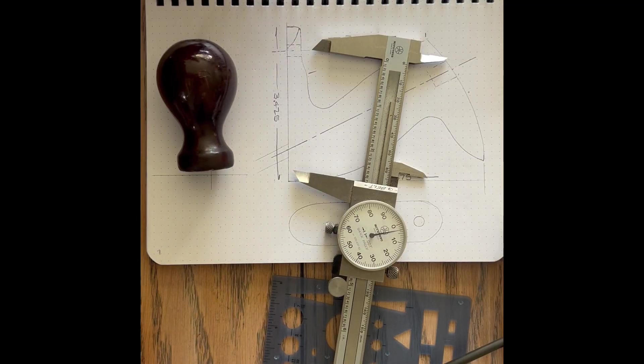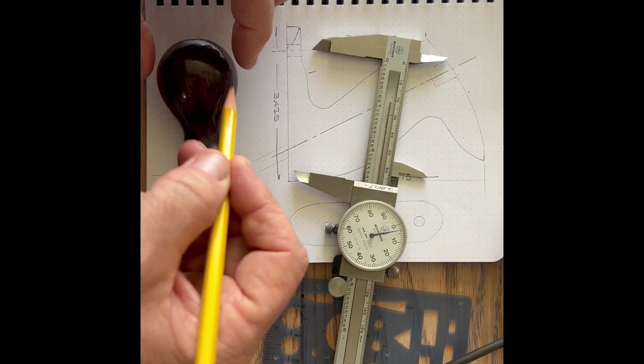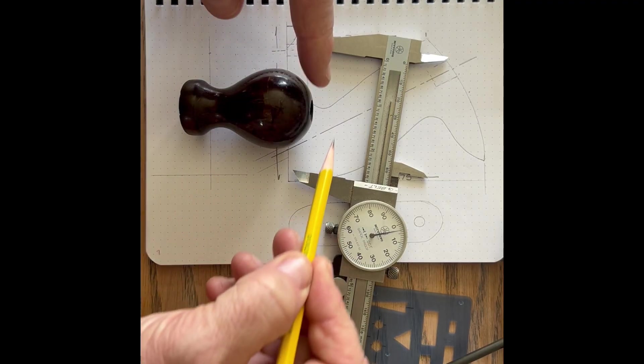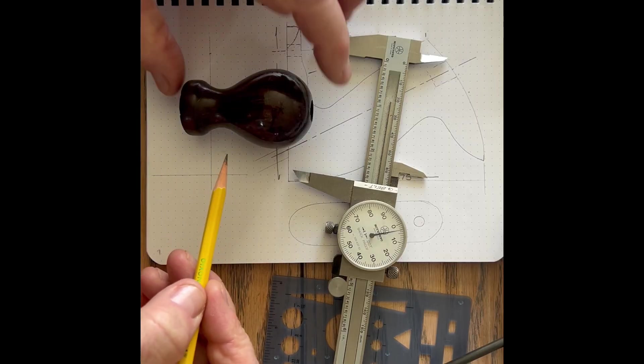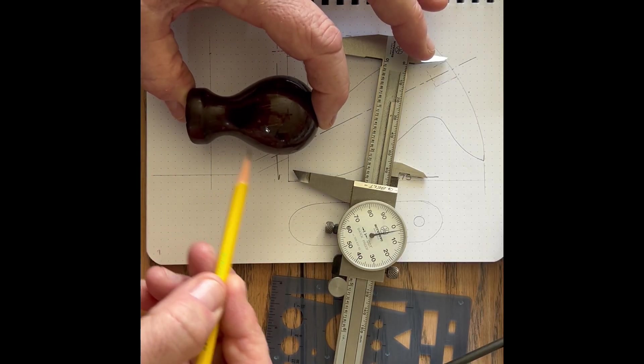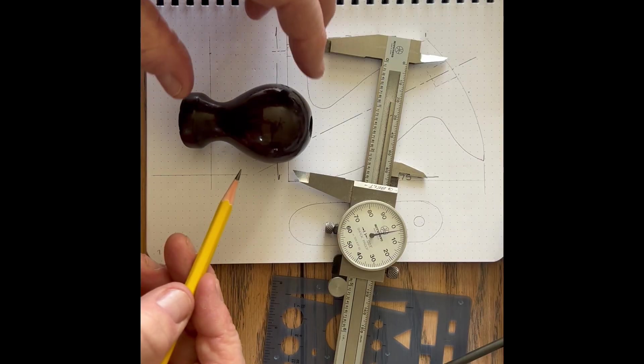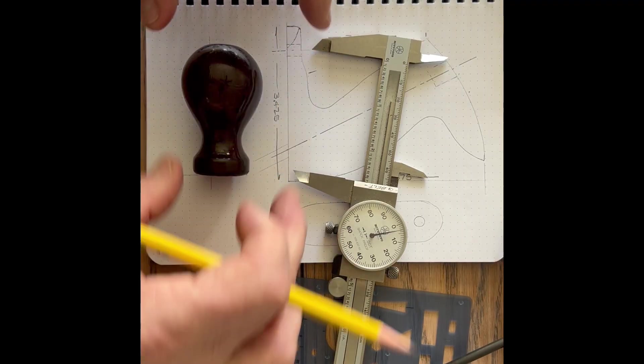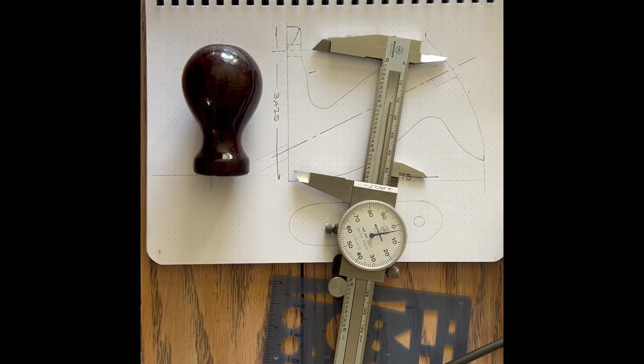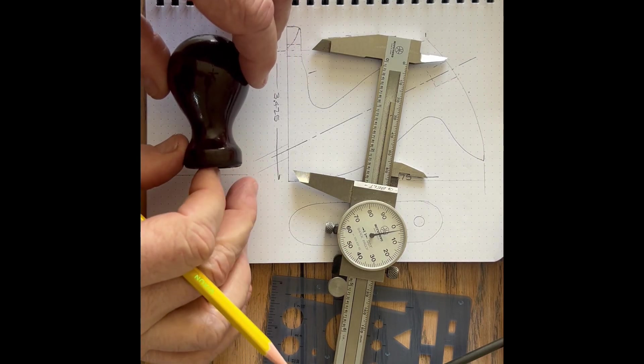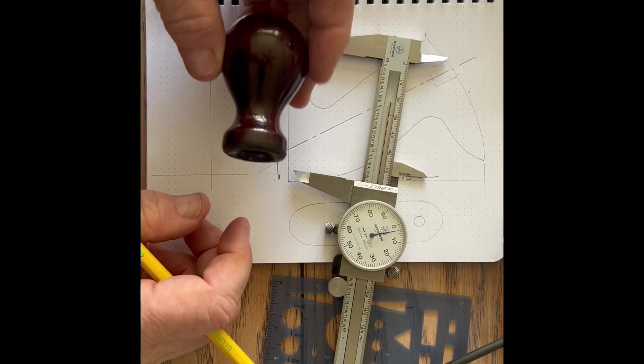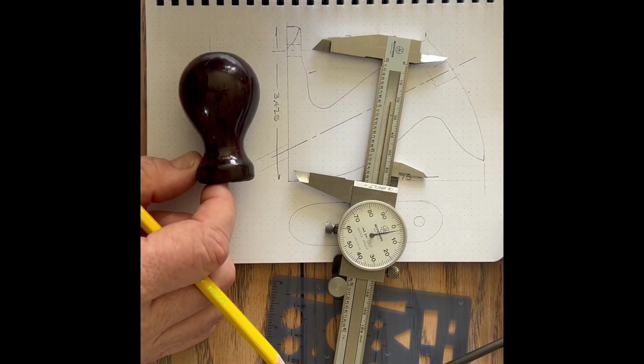There's my overall height. So I'm just going to mark that. Now I have an overall height. Why we take the time and the measurements and mark this thing off is that if you look at this, I call it like hot air balloon. You see a shape that's very distinctive. I recognize this as not being a Stanley knob.